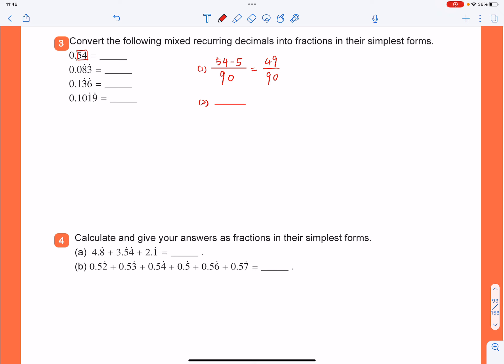As for the recurring part, you've got 8 and 3, so two digits. So you have 2 of 9s there. And then the non-recurring part is 0, so you have to add one more 0 after it.